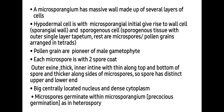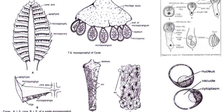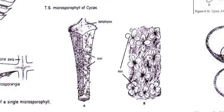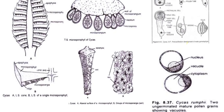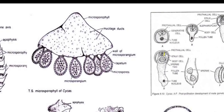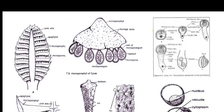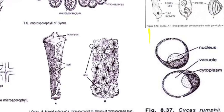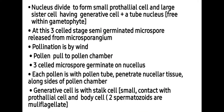Microspores germinate within the microsporangium, which is called precocious germination as in heterospory. Here you can clearly see the cone bearing microsporophylls, with each microsporophyll having a lower fertile region and upper sterile region known as apophysis. Microsporangia are present on the abaxial side, and each microsporangium has a wall, tapetum and microspores. These microspores are arranged in groups of four. After germination they will form sperms, which are multiflagellate.